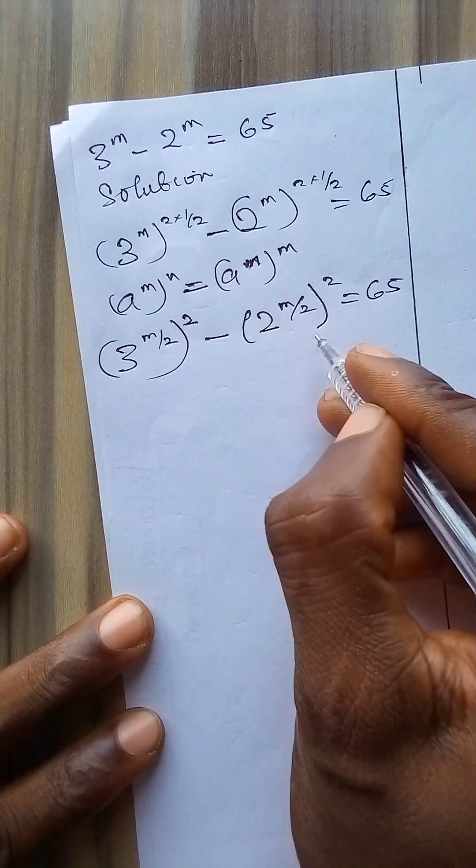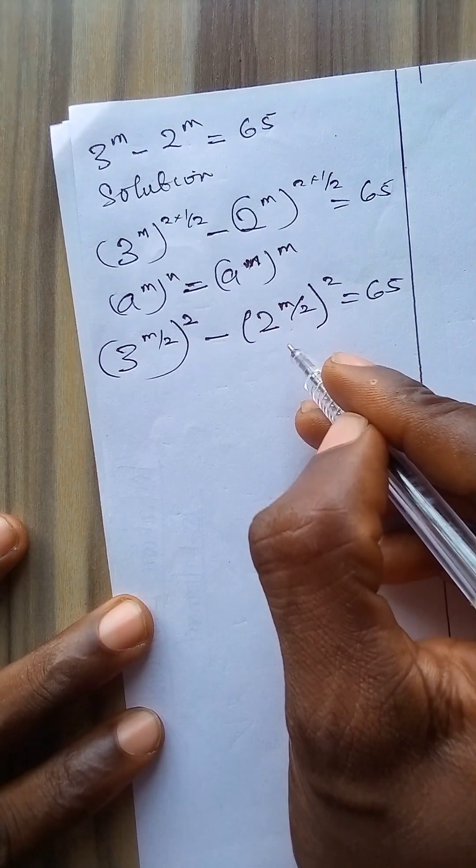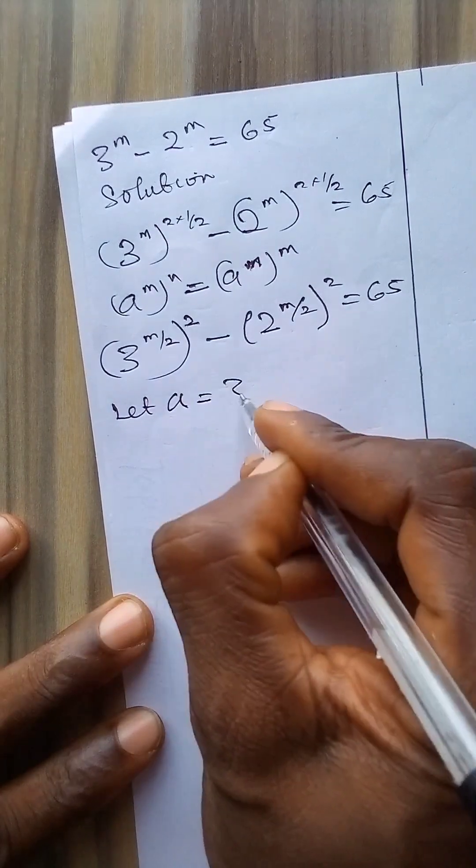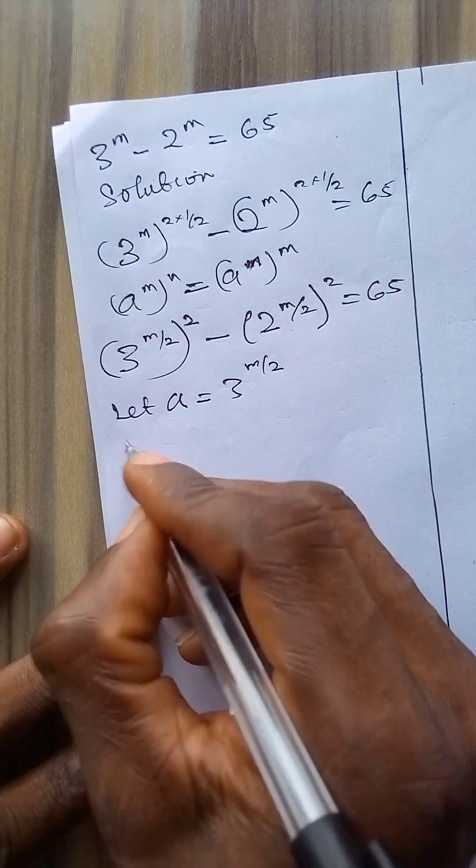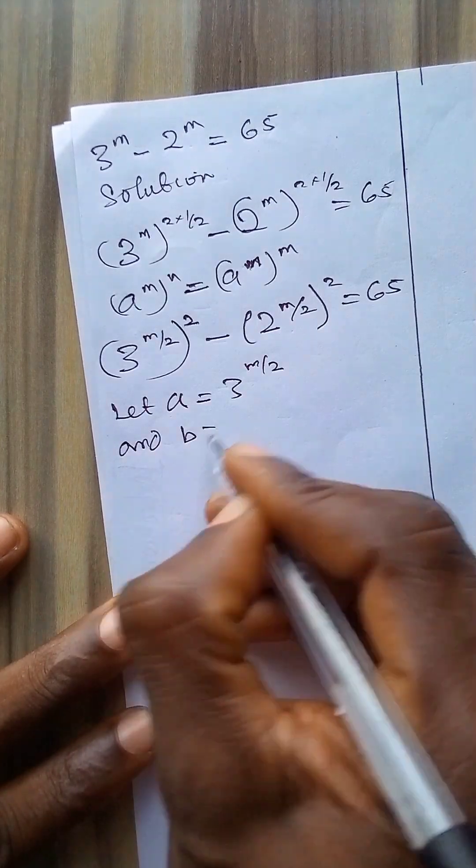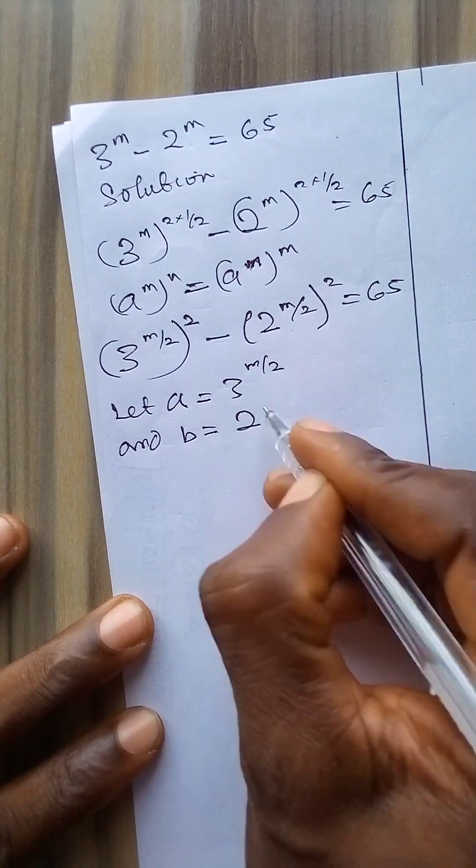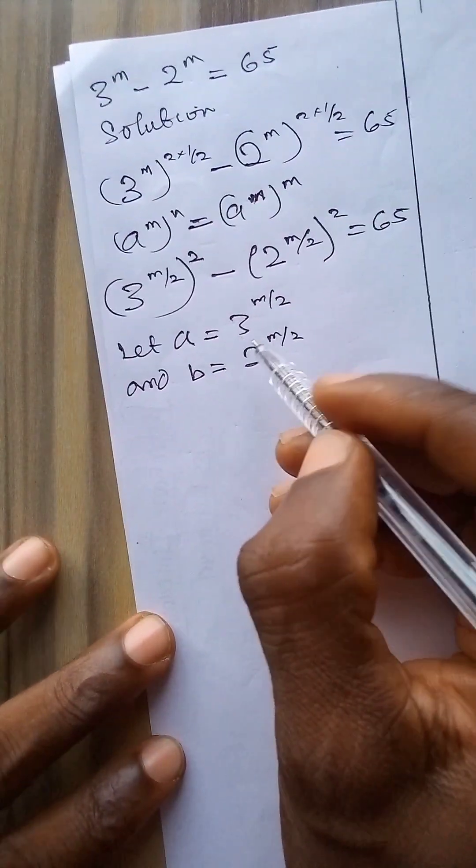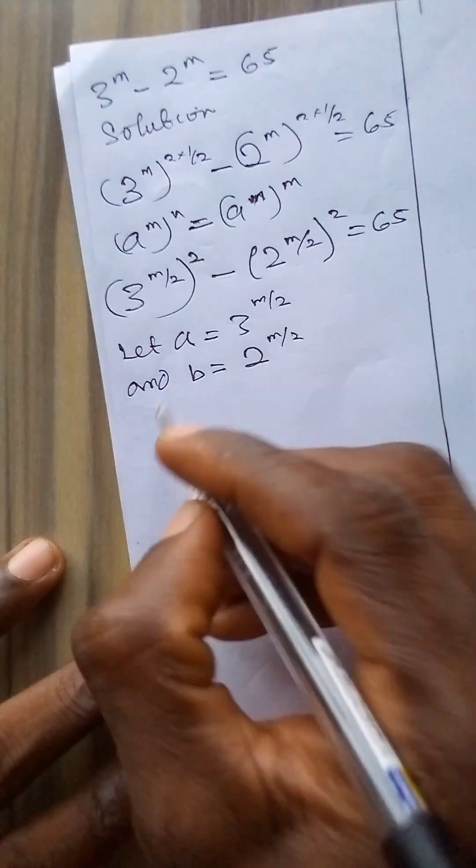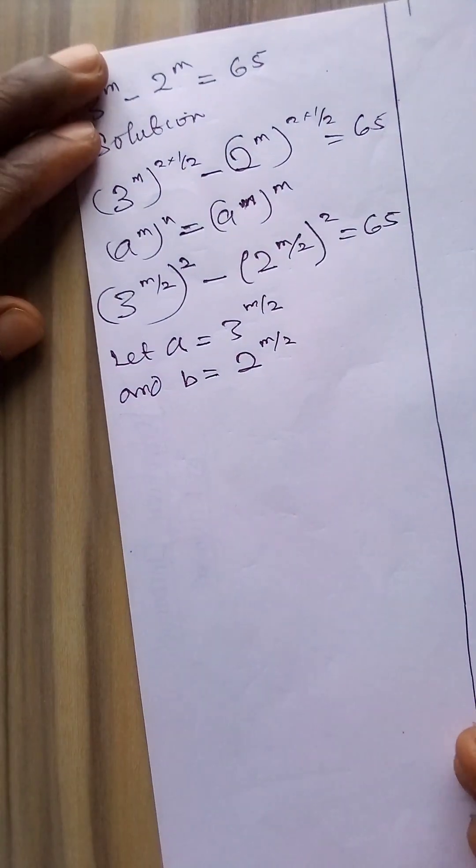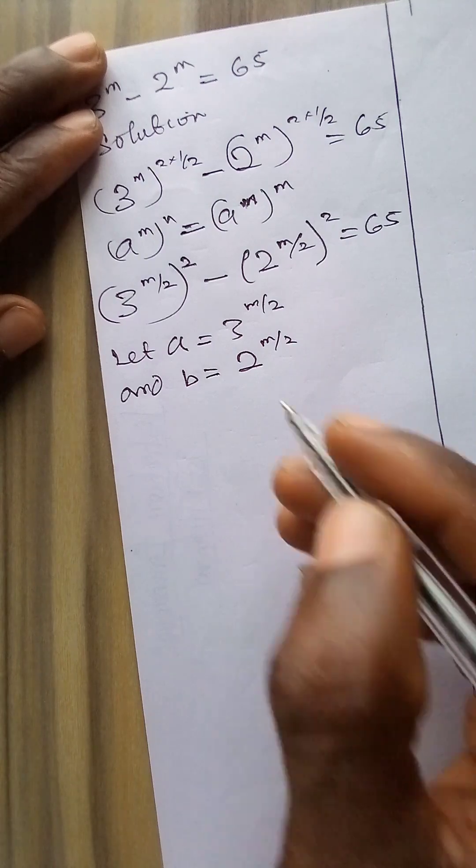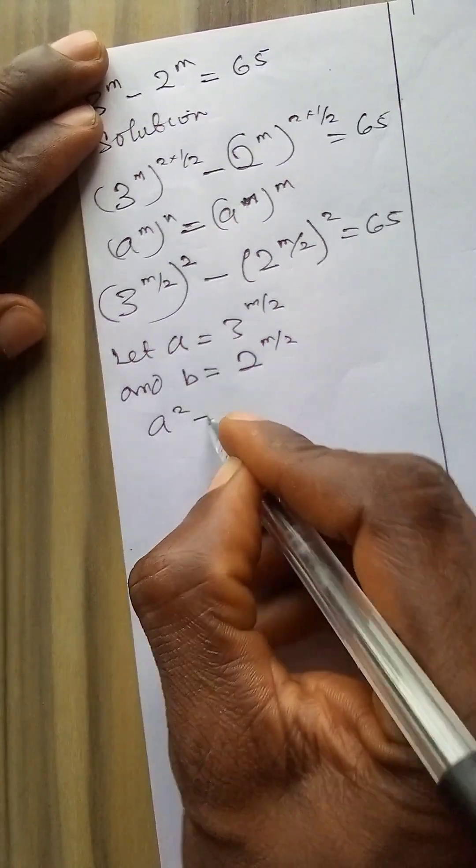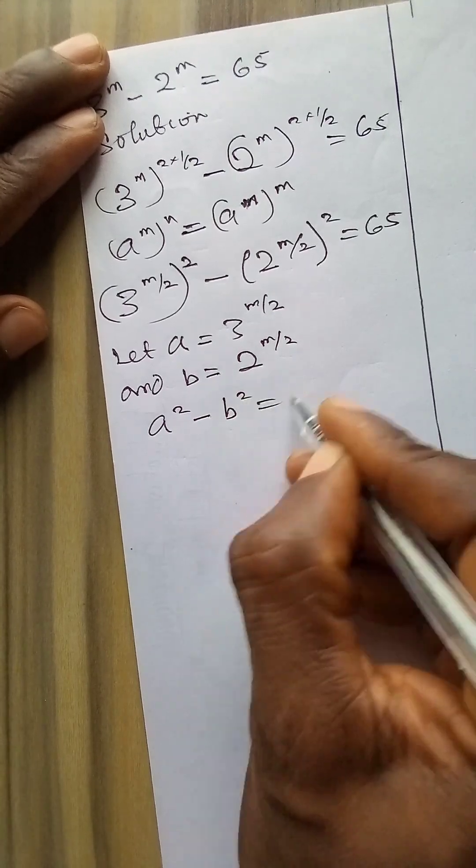So I have difference of 2 squares but I need to make an assumption. Let a equal to 3 to power m over 2 and let b equal to 2 to power m over 2. So I will put the values of a and b for these inside this equation. So that becomes a raised to power 2 minus b raised to power 2 is equal to 65.